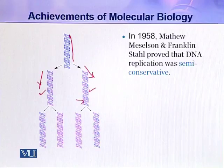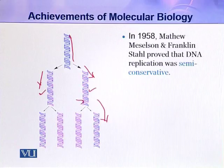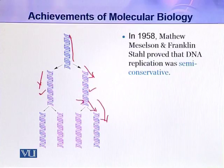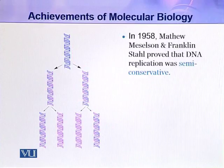The pink strands are newly synthesized. This is called semi-conservative replication — one strand is conserved from the parent, and in the next replication, again one strand is conserved while the other strand is newly synthesized. This semi-conservative replication was described by Matthew Meselson and Franklin Stahl.